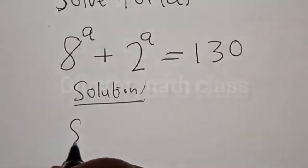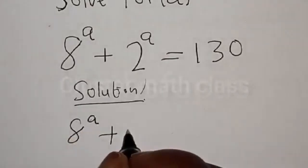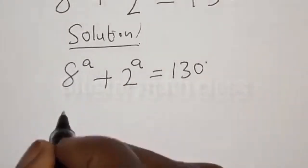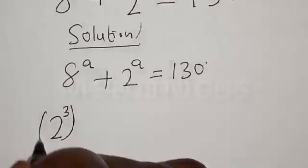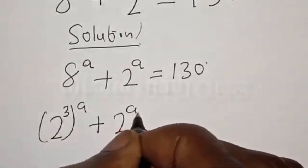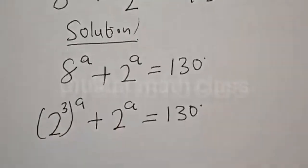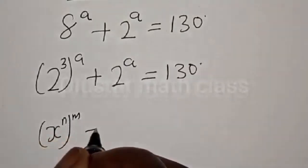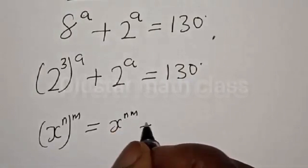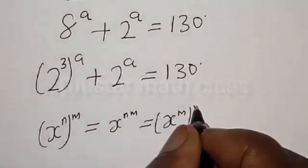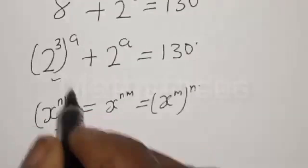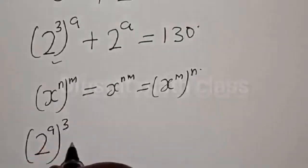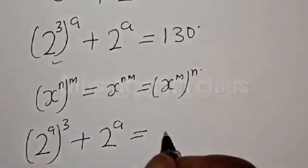We have the given equation 8 raised to power a plus 2 raised to power a is equal to 130. Then 8 raised to power a can be expressed as 2 raised to power 3 raised to power a, plus 2 raised to power a is equal to 130. Remember, if you have s raised to power n raised to power m, it is the same thing as s raised to power nm, which equals s raised to power m raised to power n. So this becomes 2 raised to power a raised to power 3 plus 2 raised to power a is equal to 130.